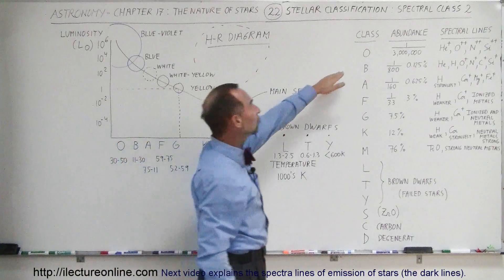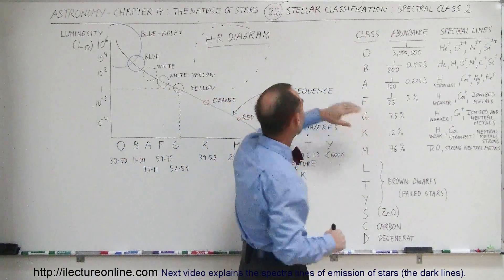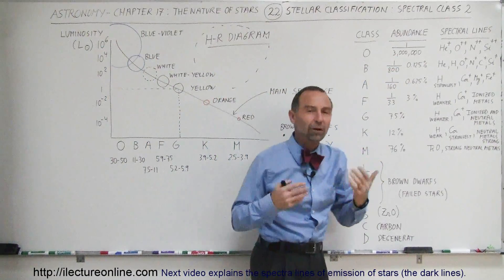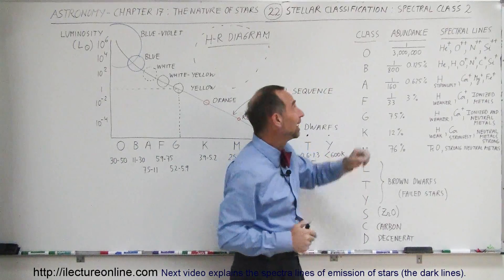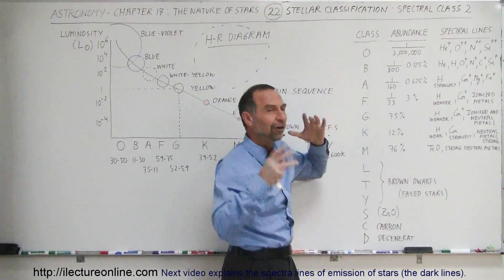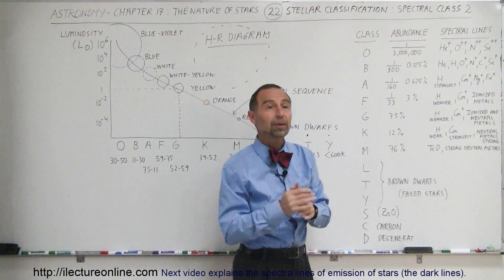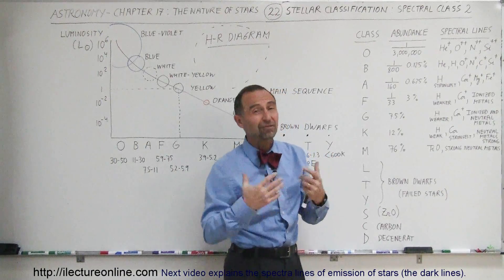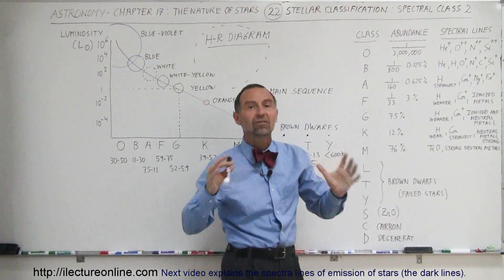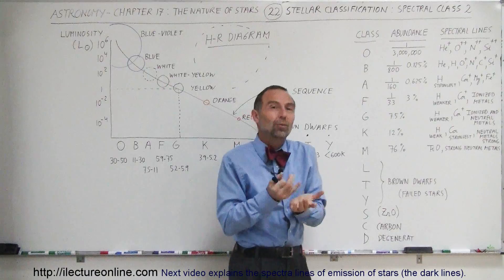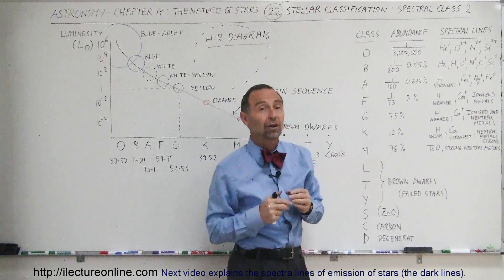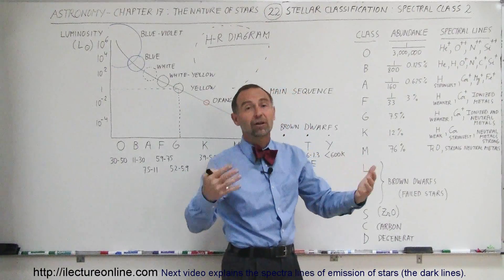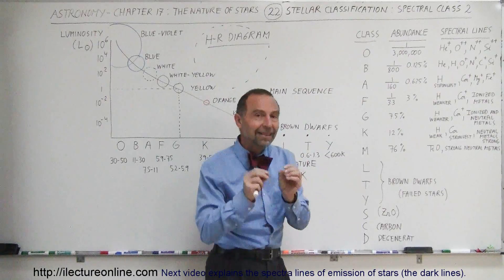The O-class stars are the very hot, very big, blue stars up in the upper left corner of the main sequence. The abundance is about 1 in every 3 million stars — so they're very rare. One reason they're so rare is that they don't last very long; they burn through their hydrogen so quickly that they typically only last 5 to 10 million years before turning into red giants. By contrast, our Sun has been around for almost 5 billion years, so longer-lived stars are naturally much more abundant.